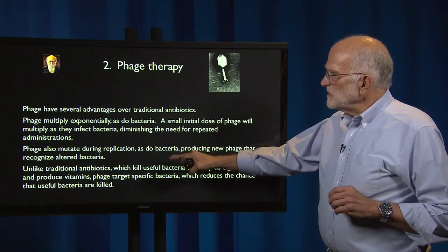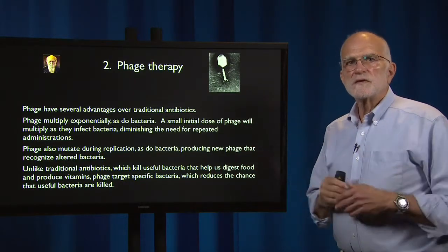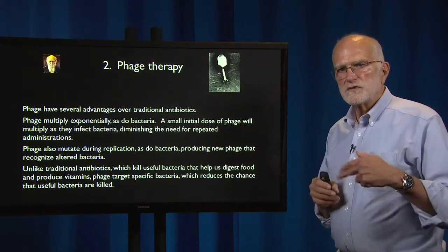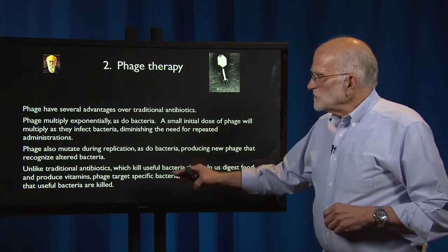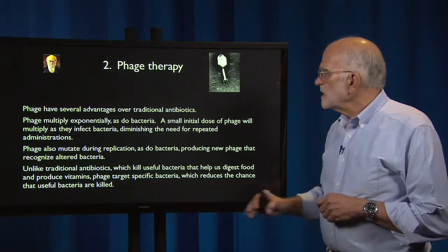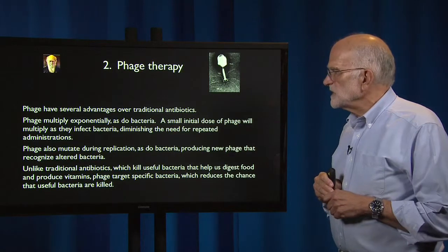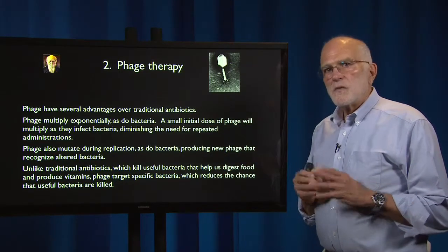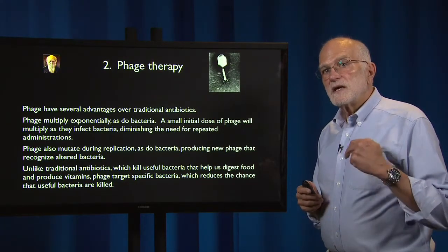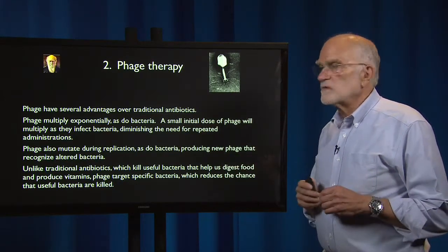Phage also mutate during replication as do bacteria, producing new phage that can recognize altered bacteria. In other words, bacteria can't run away genetically from the phage — the phage keep up with them. Unlike traditional antibiotics which kill useful bacteria that help us digest food and produce vitamins, phage can be used to target specific bacteria, reducing the chance that useful bacteria are killed. One problem with antibiotic treatment is that it wipes out most of the microbiota, allowing resistant strains of things like C. difficile to invade — that problem can be avoided with phage therapy.